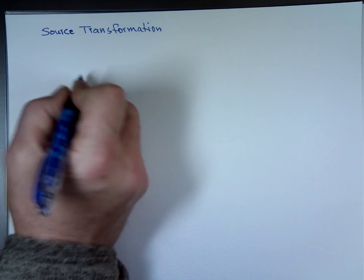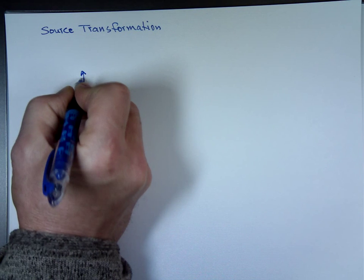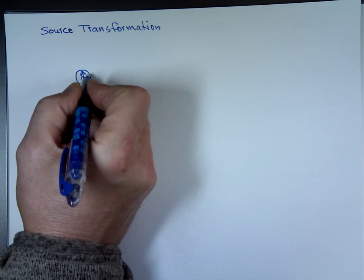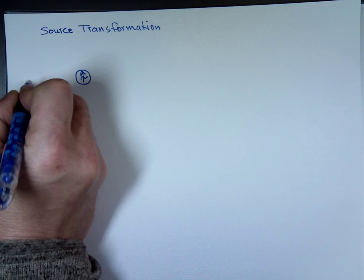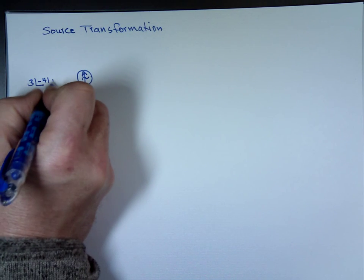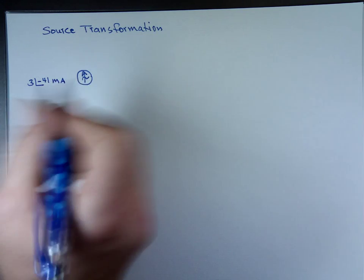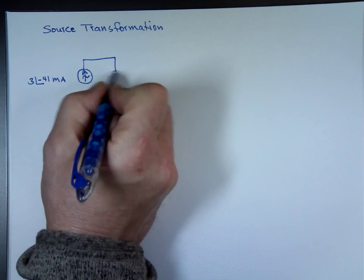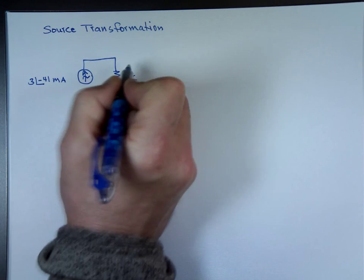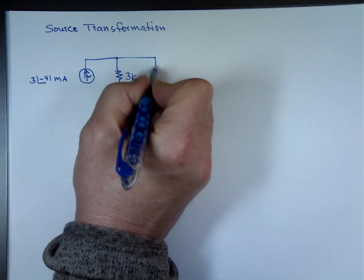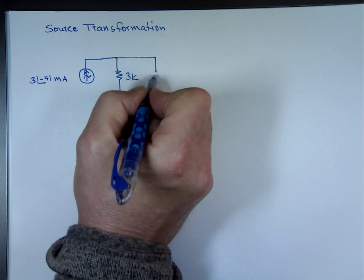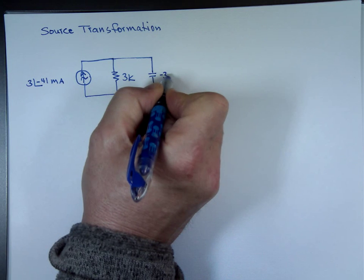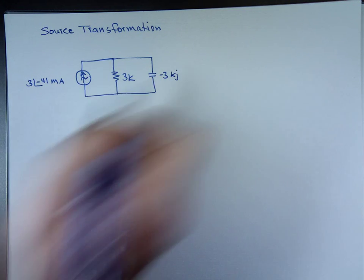So let's assume we have this circuit, everything in phasor, to make a quick video. 3 angle negative 41 milliamp, 3k, negative 3 kilojoules.